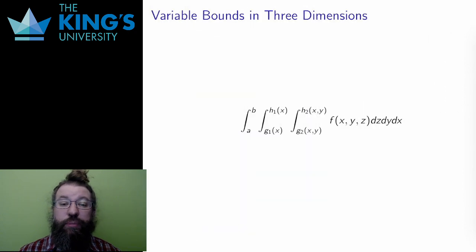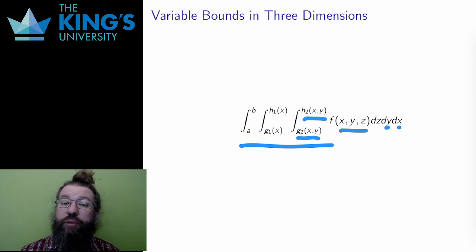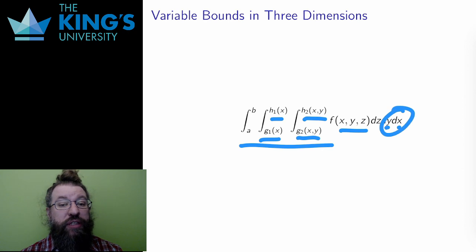this scales up in dimension quite nicely. For a function of three variables, the inside integral may have bounds that depend on both of the outside variables, and likewise the middle integral can depend on the variable outside of it, but not on the variable inside it. And the outside bounds, as before, must just be constants.